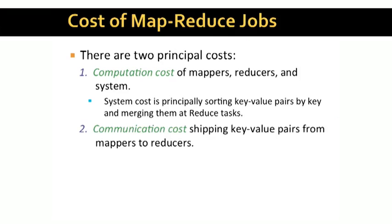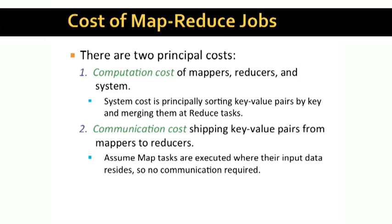And then there is the communication cost. This is really the cost of moving key-value pairs from where they are generated to where they are used by the reducers. In general, no communication is needed to move data from the input to the mappers — it is preferable to move the code to the data rather than vice versa. So we assume the MapTasks run at the same compute node where their input chunk is located. On the other hand, we'll assume that every key-value pair is consumed by a reducer that is not at the node where it was generated. This will be very rare as a coincidence, so we'll assume it never occurs to keep the computation simple.